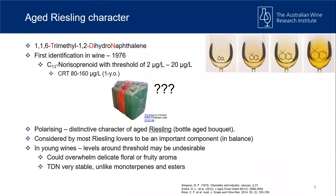TDN is most often called kerosene or petrol-like, though panels sometimes use 'plastic' or simply 'aged Riesling character.' I'm going to run with kero or petrol today because whenever we give it to panels to develop their own descriptors, they come back with kerosene — whether that's a learned trait or not. TDN and aged character are quite polarizing: some people really want it in an aged Riesling, some don't. In a young Riesling it's not desirable, and it needs to be in balance.